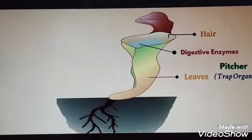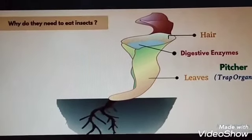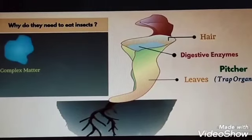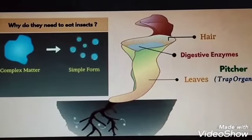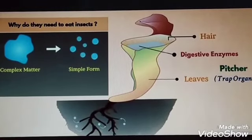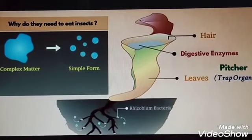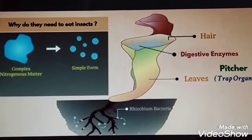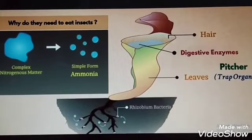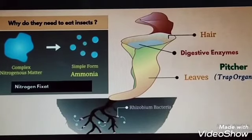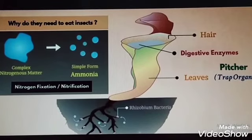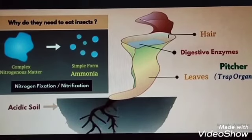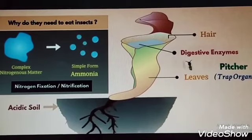The question is: why do they need to eat insects? The reason is quite simple. There is a need for complex nitrogen matter in a form that can be used by the plants, which is normally obtained by bacteria such as Rhizobium bacteria. The process of conversion of complex nitrogen matter into simple form — ammonia — that can be used by plants is called nitrogen fixation or nitrification. Because of the acidic soil, this process cannot be completed, so these plants seek other sources of food such as insects.